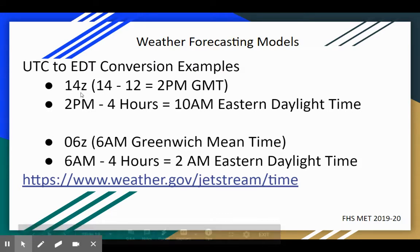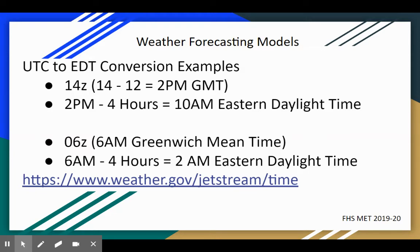Here's an example: 14Z. I like to ask how much more than 12 is that? 14 is two more than 12, which means it's 2 p.m. at the prime meridian on the 12-hour clock. Then subtract 4 hours to get eastern daylight time: 2 p.m. minus 4 hours gives you 10 a.m. eastern daylight time. Counting it out: 2 p.m., 1 p.m., noon, 11 a.m., 10 a.m.